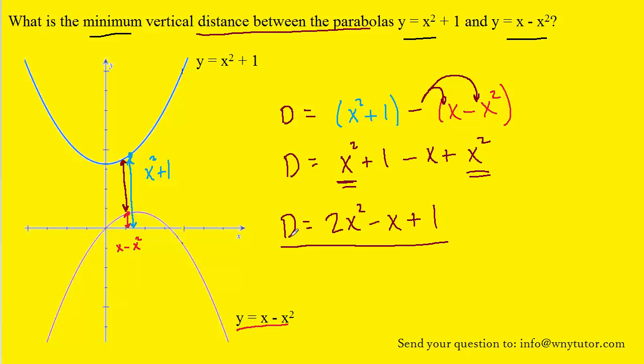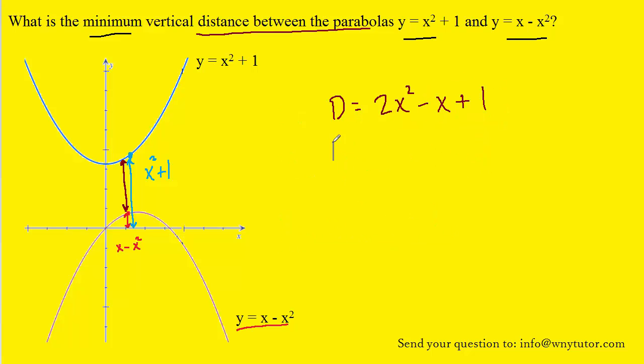It is that distance that we are trying to minimize. And in order to do that, we're going to have to calculate the derivative of this equation. We can call the derivative d prime. And when we take the derivative of 2x squared, we'll just use a power rule.